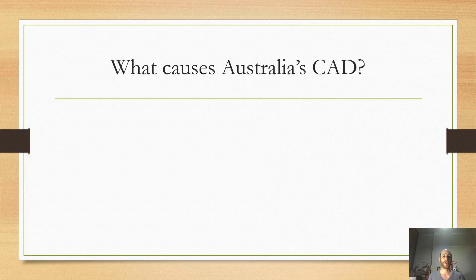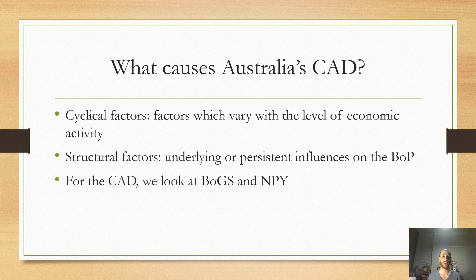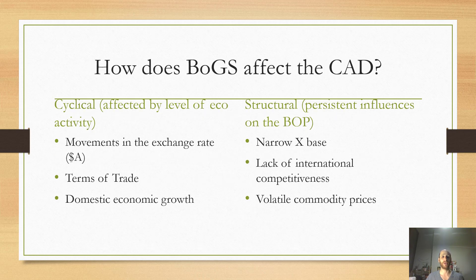There are two main factors that cause Australia's current account deficit. One is cyclical factors — these are factors that vary with the level of economic activity. The other is structural factors — things that persist even if the economy is doing relatively well or poorly. For the CAD, we look at BOGS and NPY as the two main causes. In this video we're focusing on BOGS.